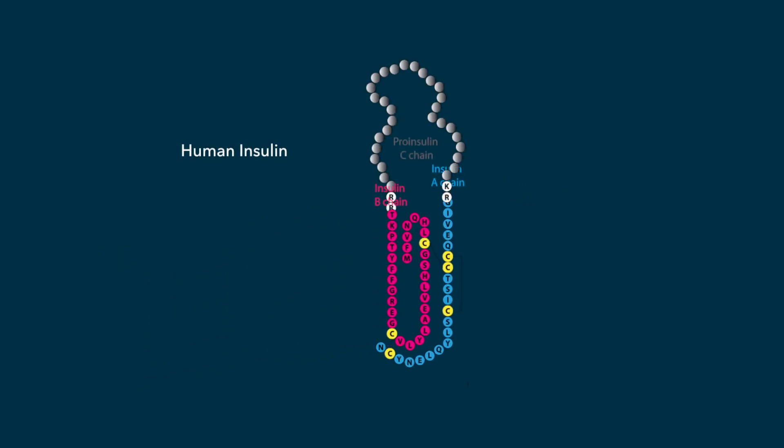So the thing about insulin is it's actually two molecules. The two pieces are connected by a chain, and then that chain is eventually cut off, and the two pieces are together.